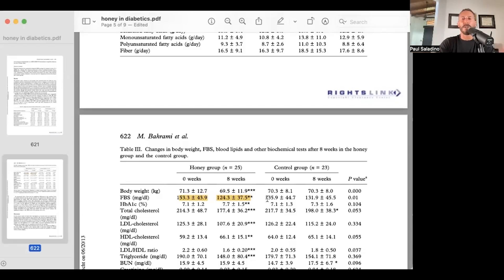The control group, 135 milligrams per deciliter, 131.9 at the end of the study. So that I think is fascinating. Now, let's talk about the blood sugar.